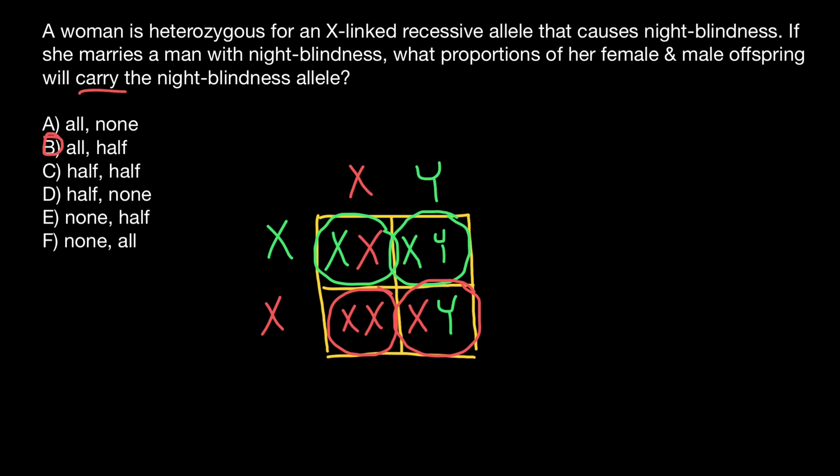All of the female progeny would have this allele and half of the male progeny would have this allele. That's all for today — thank you for your attention. Please subscribe for my new videos that I post almost every day, and see you in the next video. Goodbye!